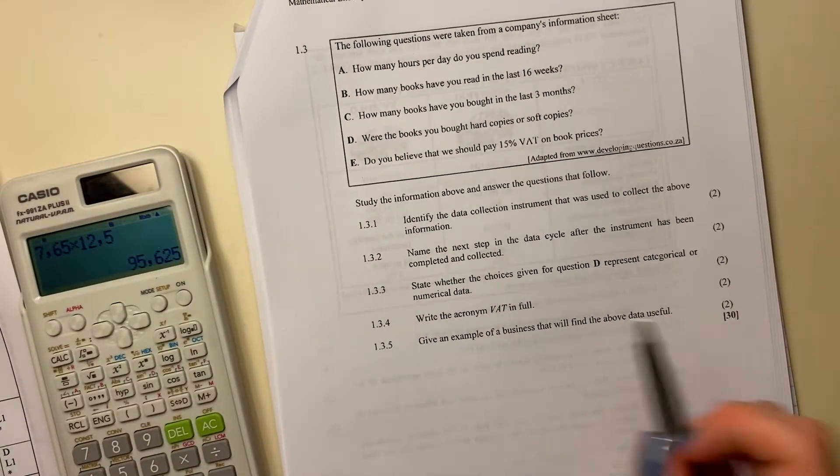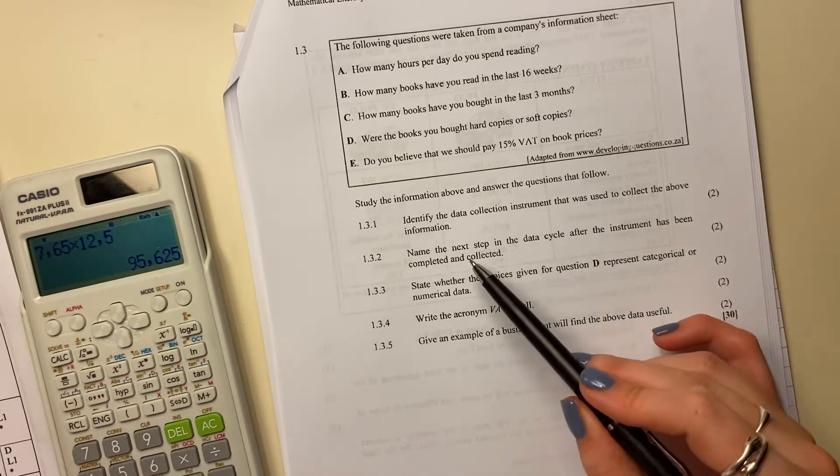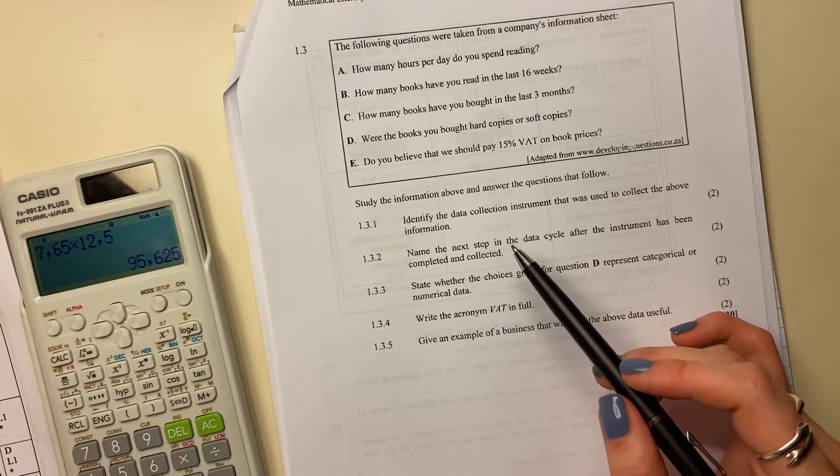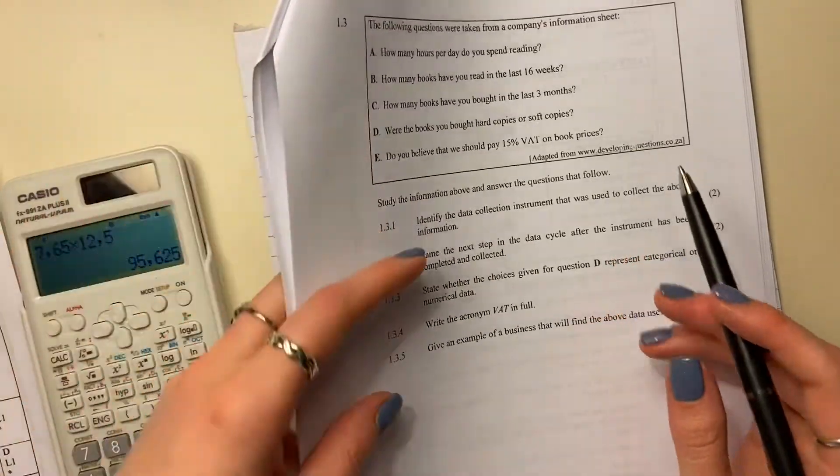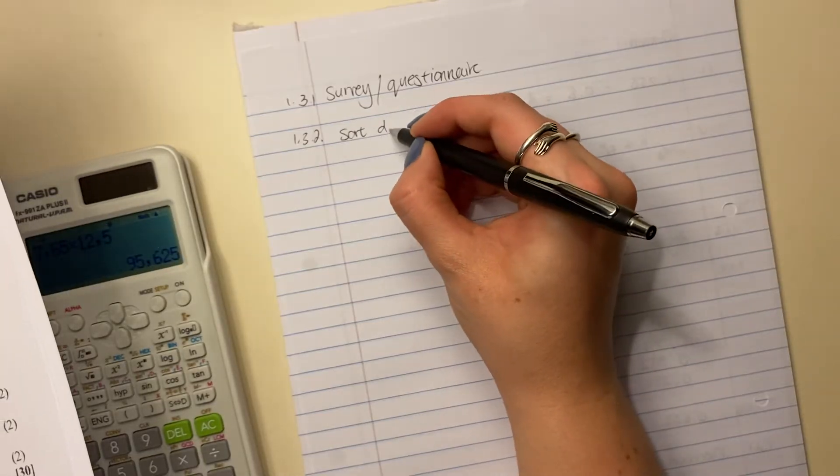Okay, then 1.3.2. Name the next step in the data cycle after the instrument has been completed and collected. So basically, once you've done the survey, what do you do? Well, you have to sort the data, right? So you can say classify, you can say sort. So I'm just going to say sort data.